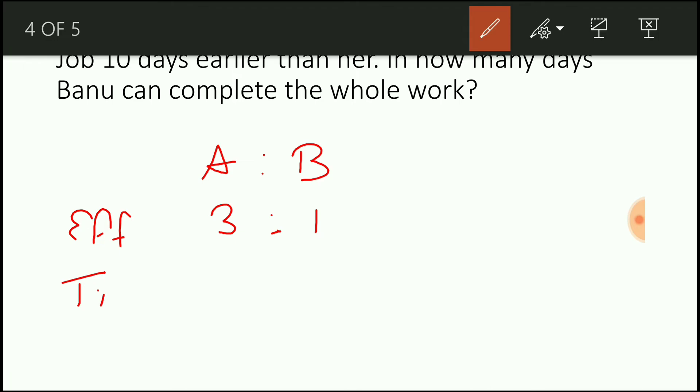So what is the time taken ratio? It is inversely proportional. So the time taken ratio is 1 is to 3. So Anu is completing the job 10 days earlier comparing to Banu. So here the difference between Anu and Banu's work is 10 days. So here in this ratio, the difference between Anu and Banu is 3 minus 1, which is 2x.